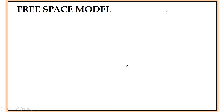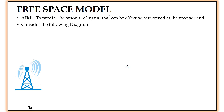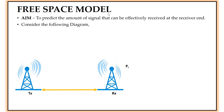Now going to the model, I am going to take the free space model. My aim is to predict the amount of signal that can be effectively received at the receiver using this free space model. I am going to consider a diagram with an antenna at the transmitter side and another antenna at the receiver side, separated by a distance d. The transmitting antenna has gain gt and power pt; the receiving antenna has gain gr and power pr.